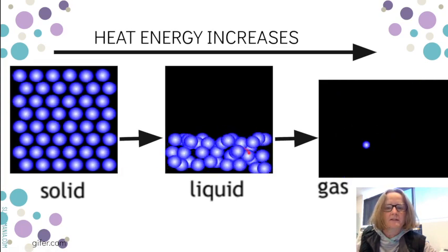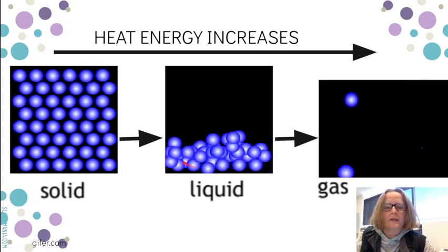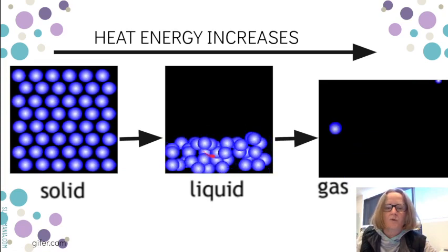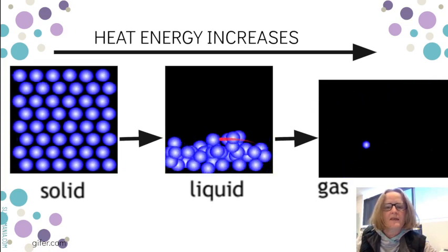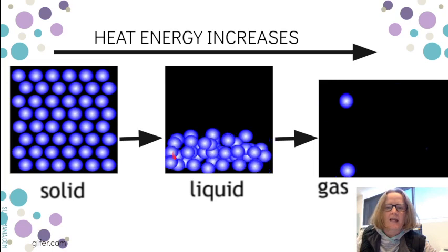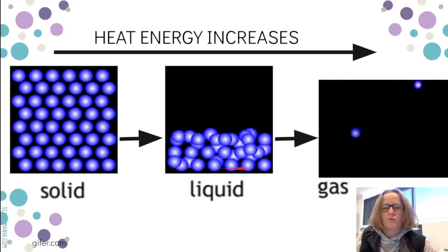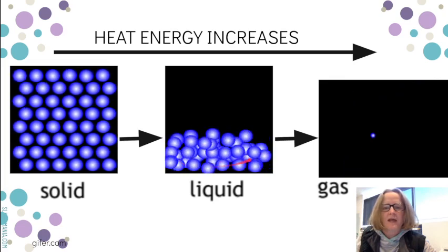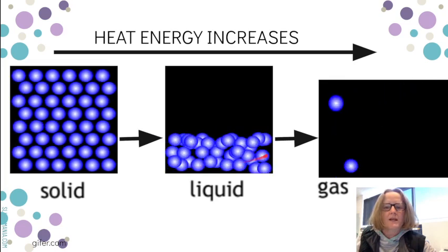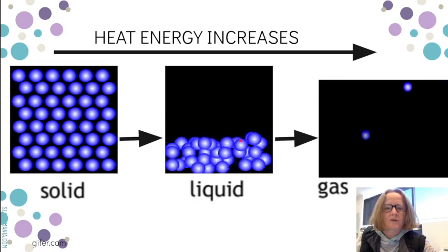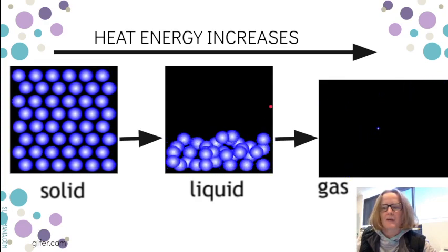So here you'll see the particles are still moving, they're rolling around past each other quite quickly but they're staying within the body of the liquid and as we heat the liquid they will roll around past each other faster and faster until eventually they get enough energy to be able to break free from the surface of the liquid and become gas.